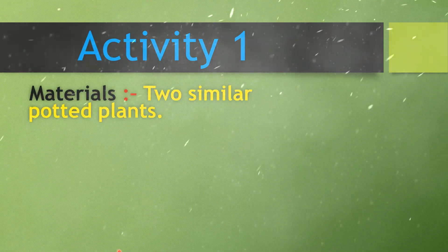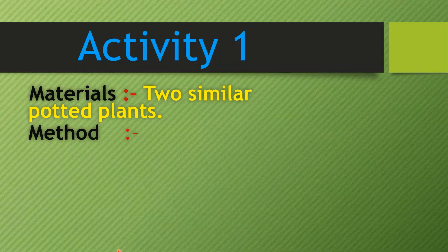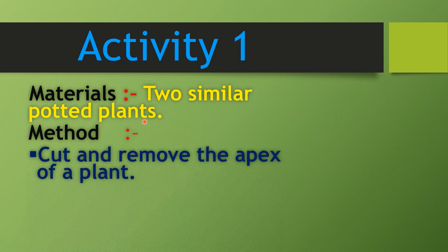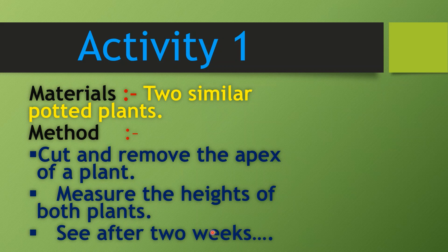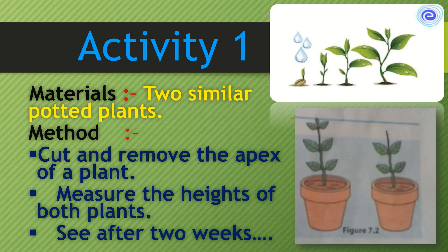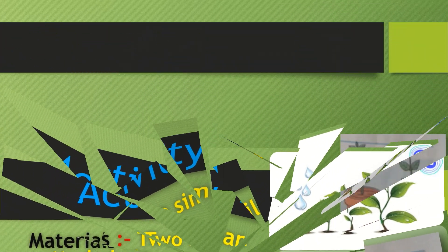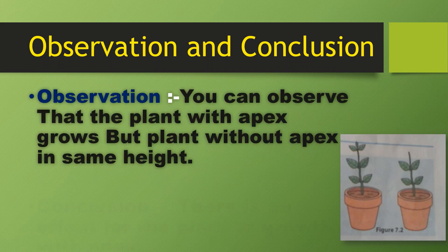We will do an activity to see what plant growth substances are. You need two similar potted plants. Cut and remove the apex of one plant, then measure the height of both plants and check again after two weeks. You can see the plant with the apex grows, but the plant without the apex stays the same height. We can conclude that the apex has an effect on plant growth.